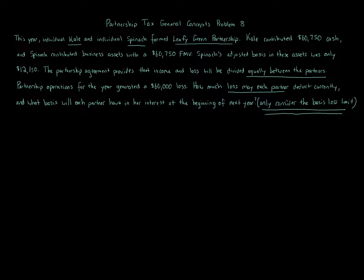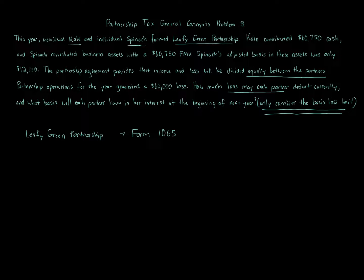Here's how to approach this broadly. We've got Leafy Green Partnership, which every year must file Form 1065. The partnership itself does not pay tax — the idea is there's one level of tax at the owner level. That income or loss flows through the Schedule K-1 to the owners, who then report it on their Form 1040. On Form 1065, we're told there is a $60,000 operating loss for the year.